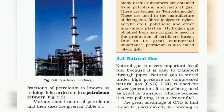Petrochemicals are used in the manufacture of detergents, fibers, polyester, nylon, acrylic, polythene, and other man-made plastics. Hydrogen gas obtained from natural gas is used in the production of fertilizers such as urea. Due to its great commercial importance, petroleum is also called black gold.